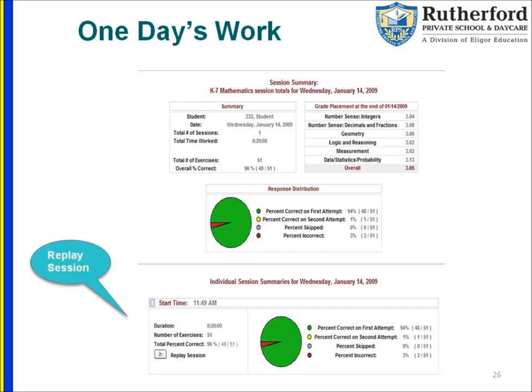Here's another example of a report showing a student's one day's work. You can see a chart displaying the percentage correct on first attempt, the percentage correct on second attempt, the percentage of questions skipped, the percentage incorrect, and the speed at which the student answers questions. This is very important for tracking the student's success and improvement over time. Overall, the reports are a great tool for the educator and parent in seeing the student's success and progress, providing detailed information to create a program specific to that student.